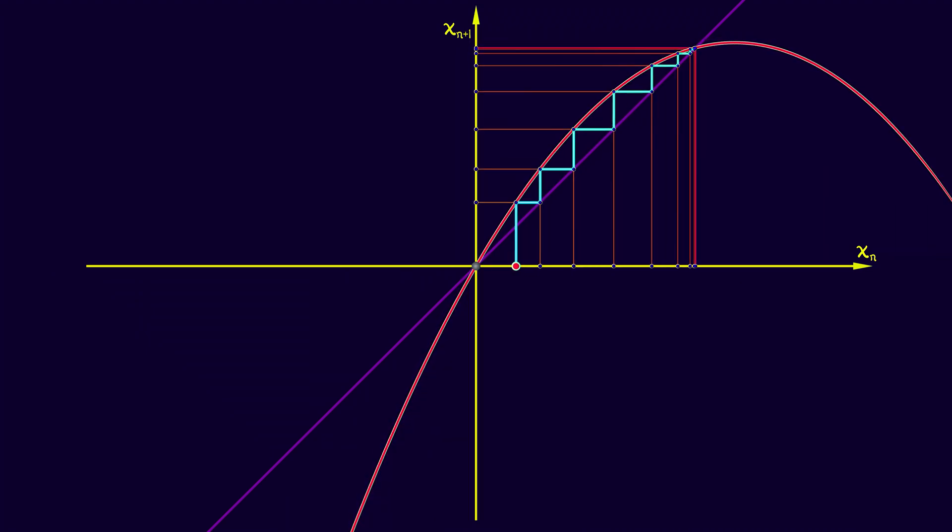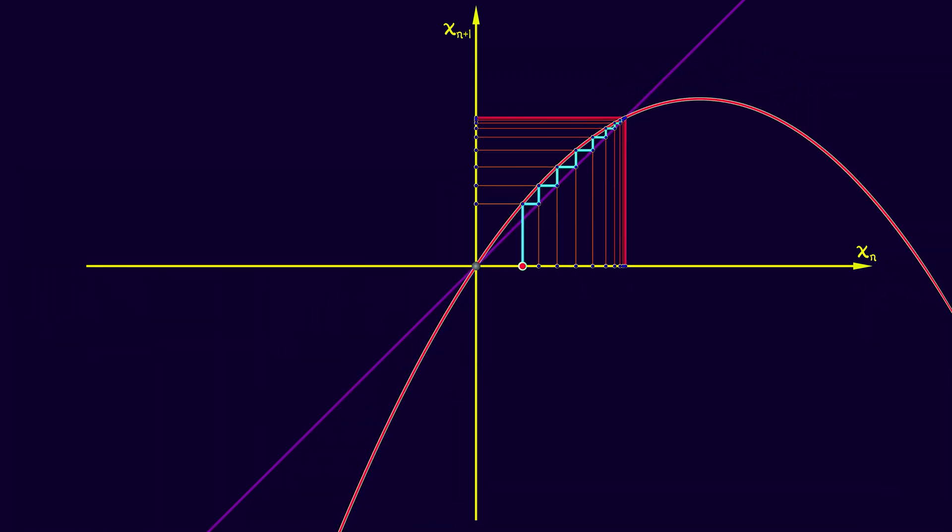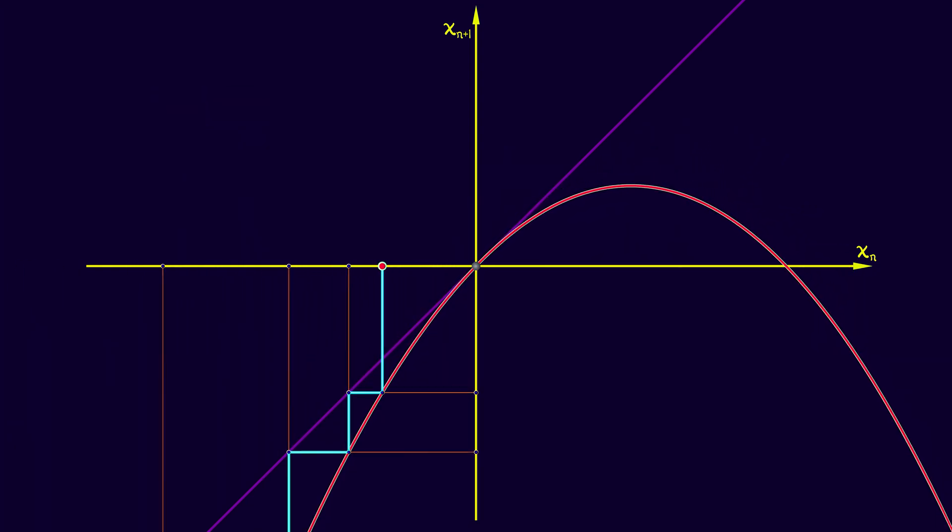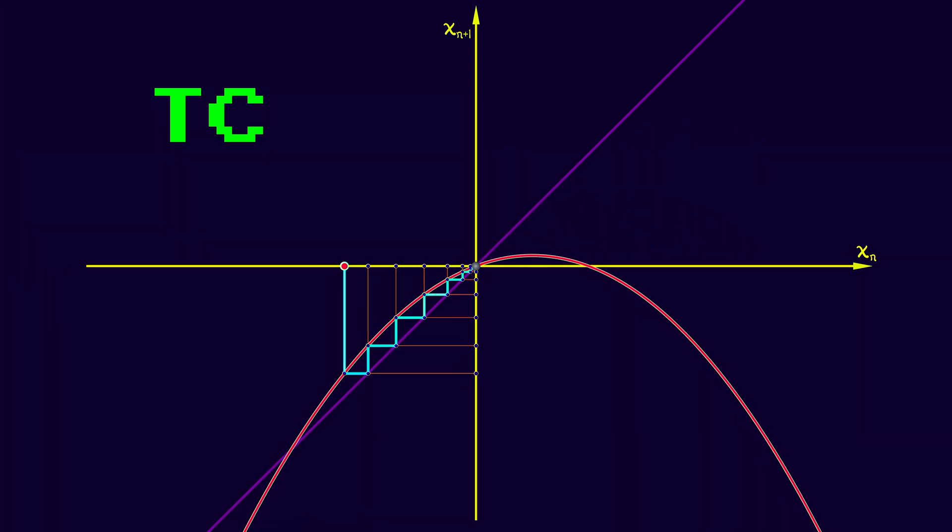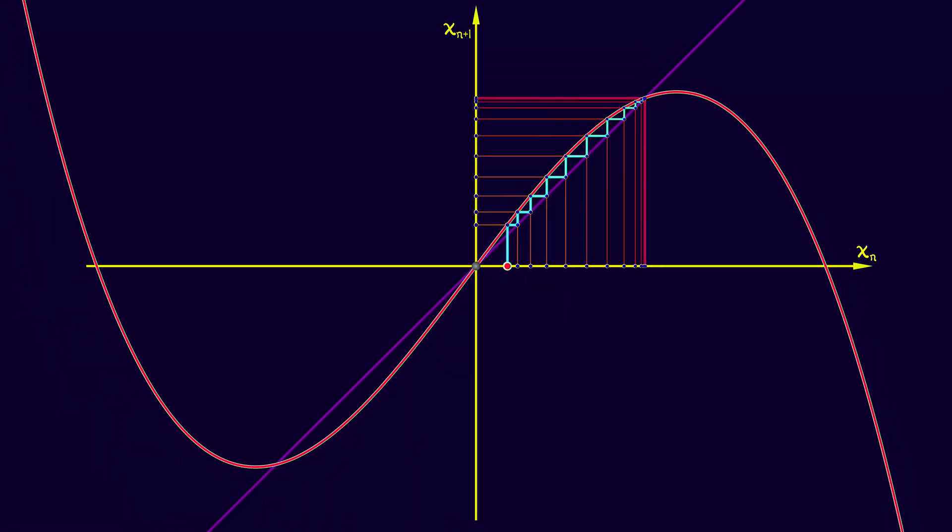What happens in a transcritical bifurcation? There you have a pair of equilibria, one stable, one unstable, and they collide into each other and exchange stabilities. They pass through each other and swap stabilities.